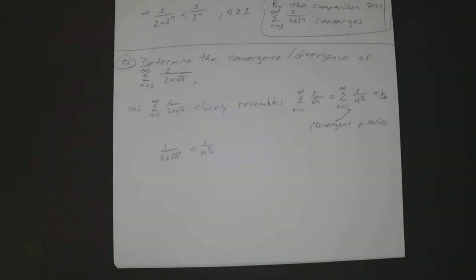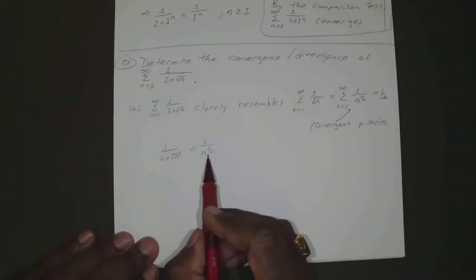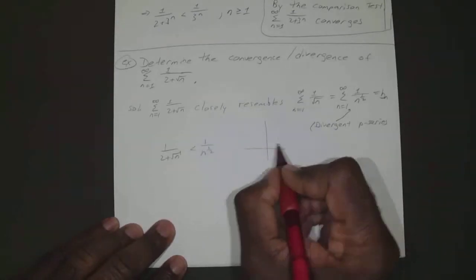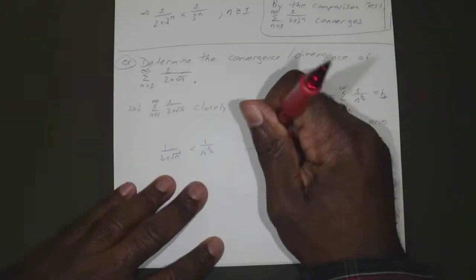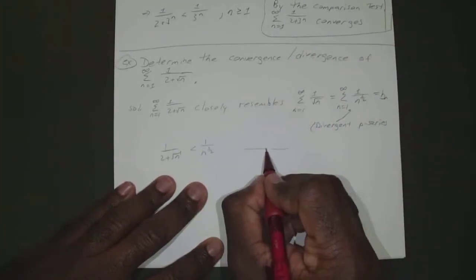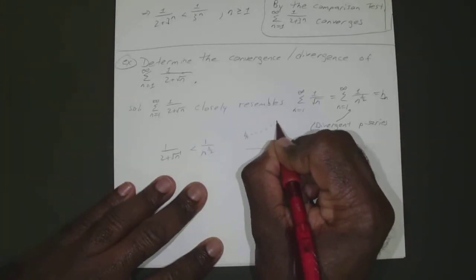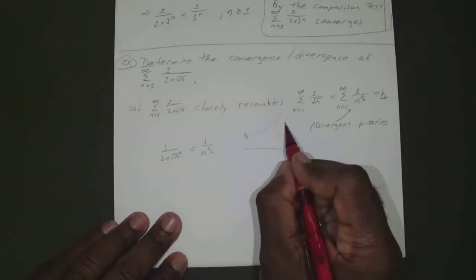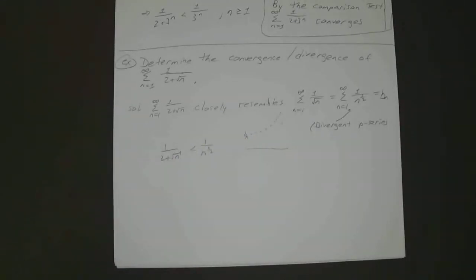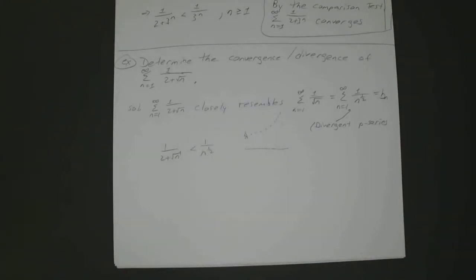This actually doesn't tell us anything, because remember a sub n has to be less than b sub n. This is our b sub n, and we know this diverges — that means b sub n diverges upward. If a sub n is less than that, we don't know if it's diverging or converging. So this doesn't help us; we have to pick another comparison. Sometimes your first comparison won't work, so you just pick another one.